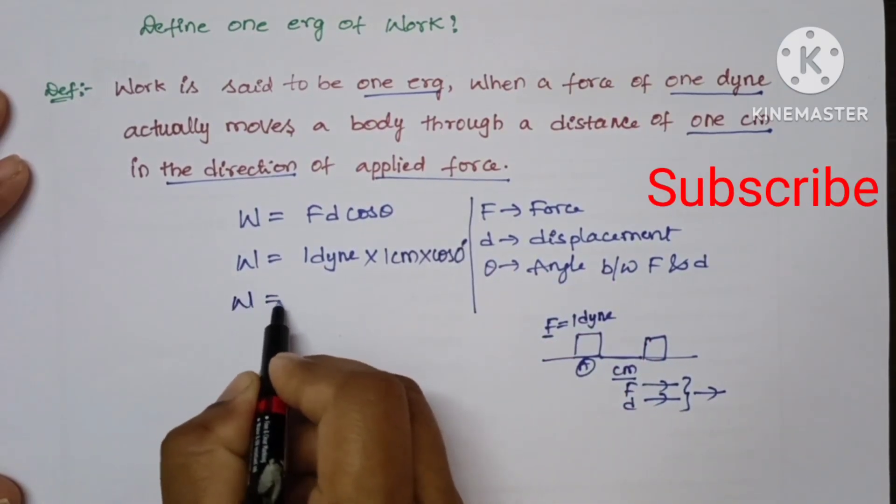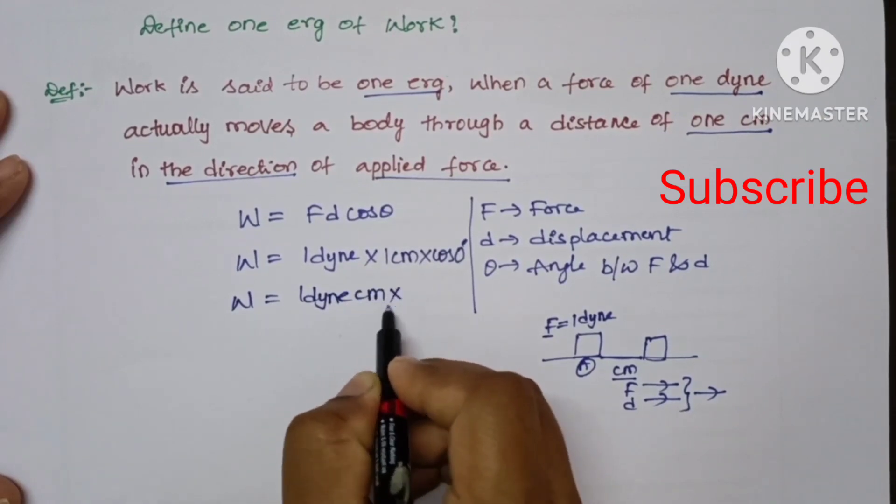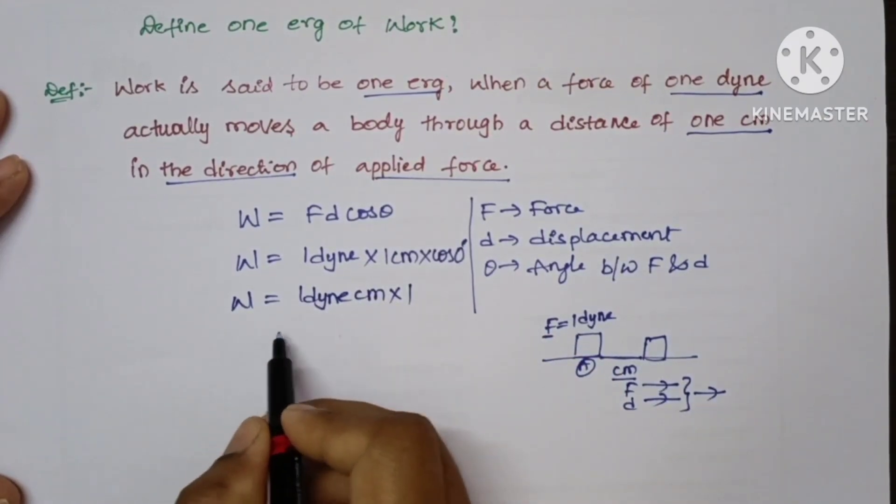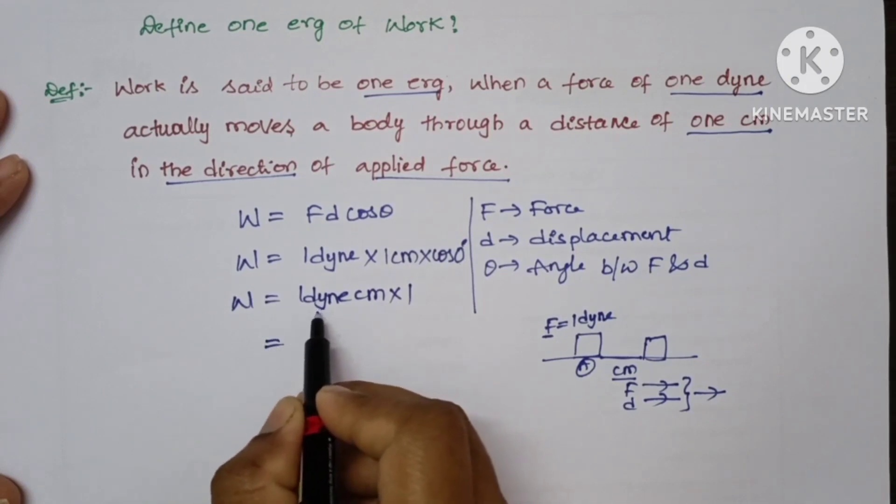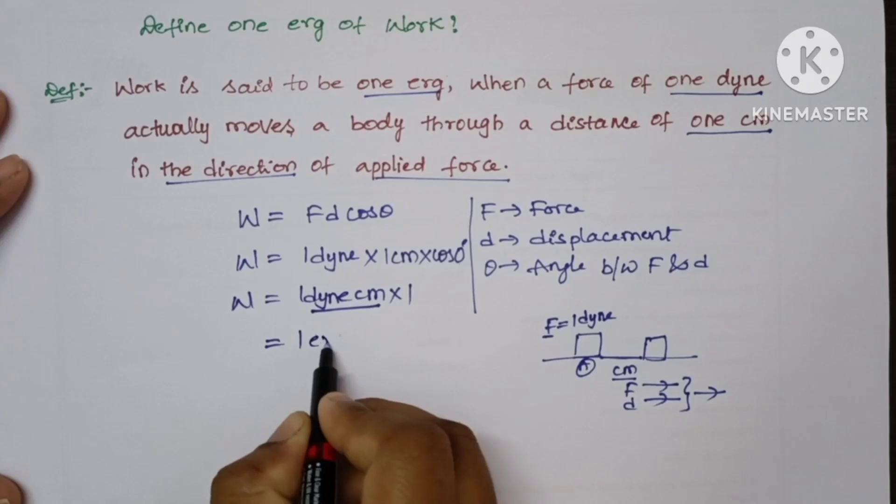So work done is equal to one dyne centimeter, and cos zero degrees is one. This is equal to one dyne centimeter, which is nothing but one erg.